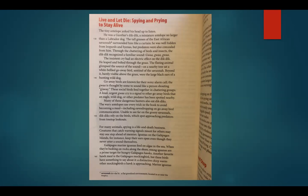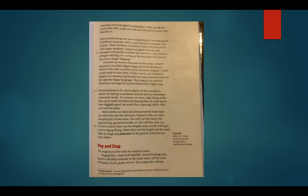Creatures that catch warning signals meant for others may stay one step ahead of enemies. Iguanas on the Galápagos Islands, for instance, keep their ears open even though they never utter a sound themselves. Galápagos marine iguanas feed on algae in the sea. When they're basking on rocks along the shore, young iguanas are a prime target for hungry Galápagos hawks. Another favorite hawk meal is the Galápagos mockingbird, but these birds have something to say about it. A distinctive chirp warns other mockingbirds a hawk is approaching. Marine iguanas eavesdrop on mockingbird conversations — they can tell the alarm from other songs and calls, and will dash for cover when they hear it.